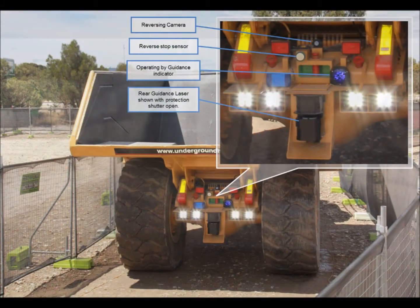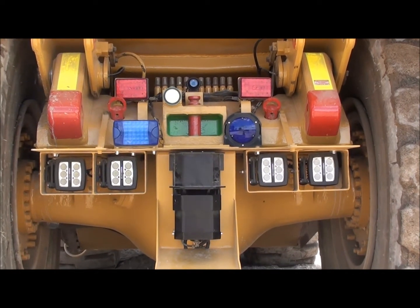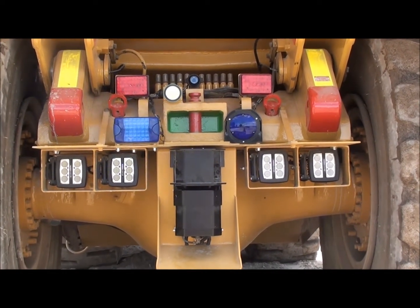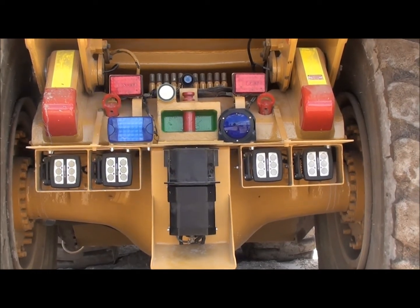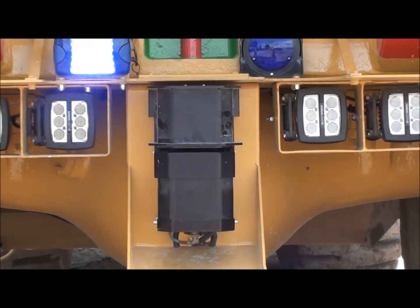The rear components comprise of the reverse camera, guidance enabled indicator lamp, reverse stop sensor as a second boundary stop input, and an RCT custom mounting solution to mount the rear laser. The rear laser is housed in a robust enclosure with an electrically driven automatic shutter assembly to minimise dust and protect the laser from rocks and debris.